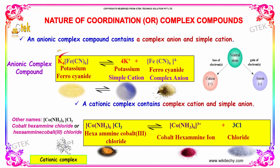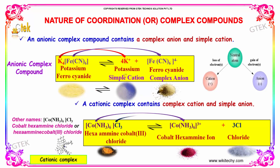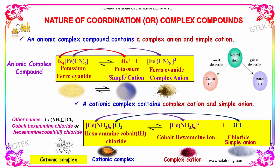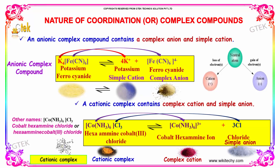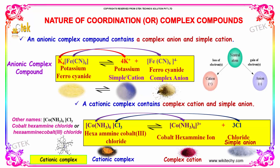An anionic complex compound contains a complex anion and a simple cation. A cationic complex contains a complex cation and a simple anion. A typical example is potassium ferrocyanide, which dissociates into potassium (simple cation) and ferrocyanide (complex anion).